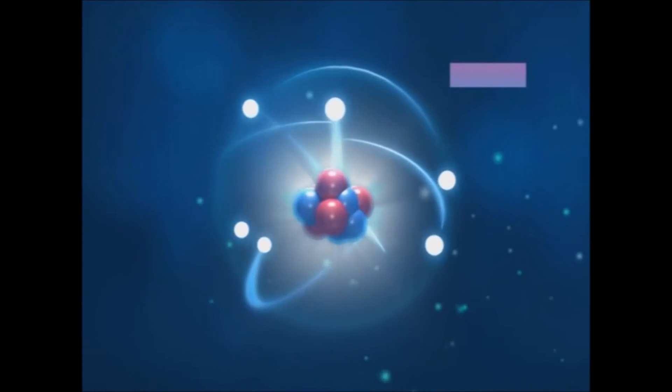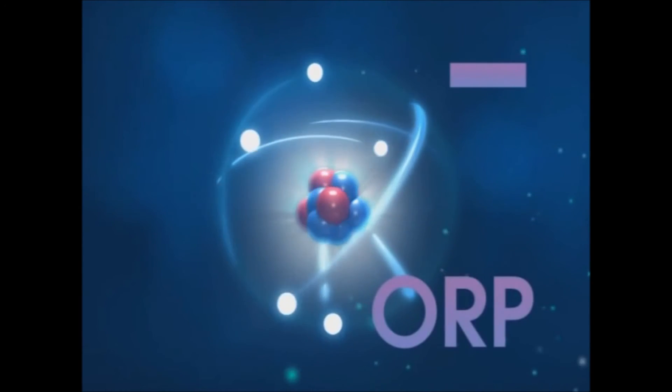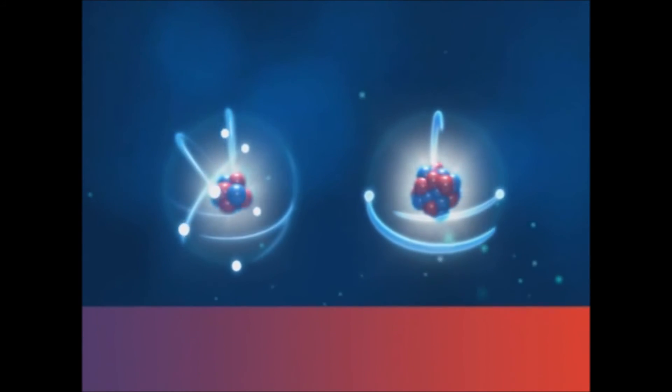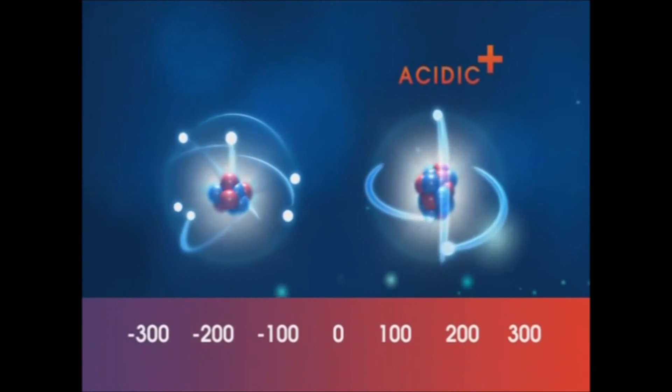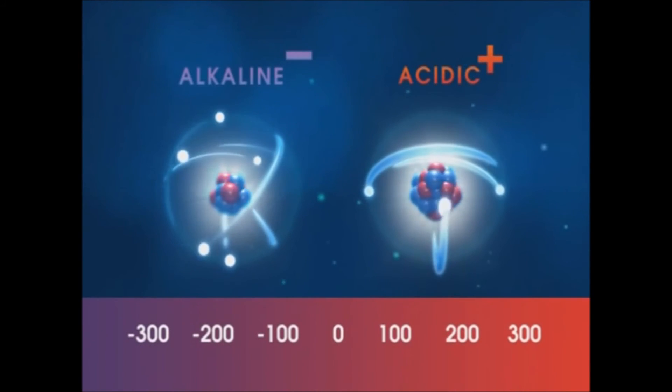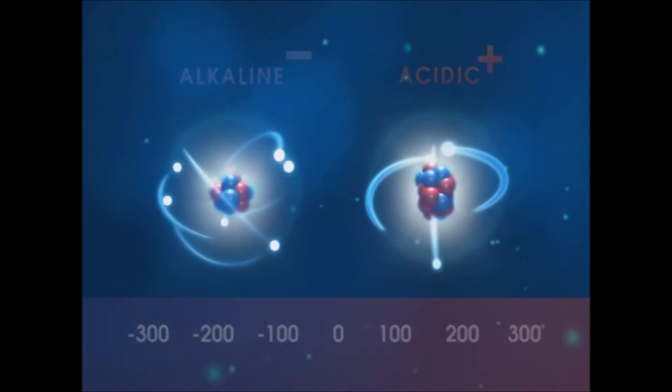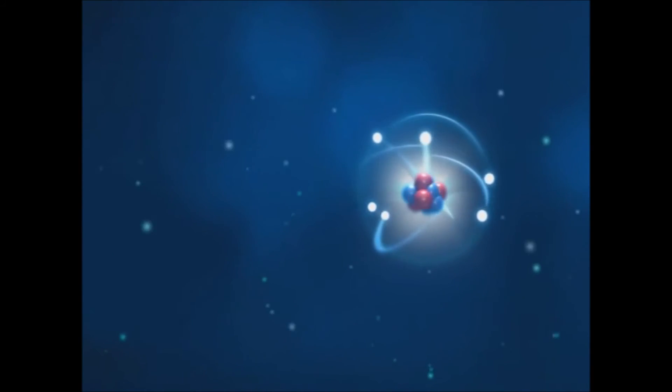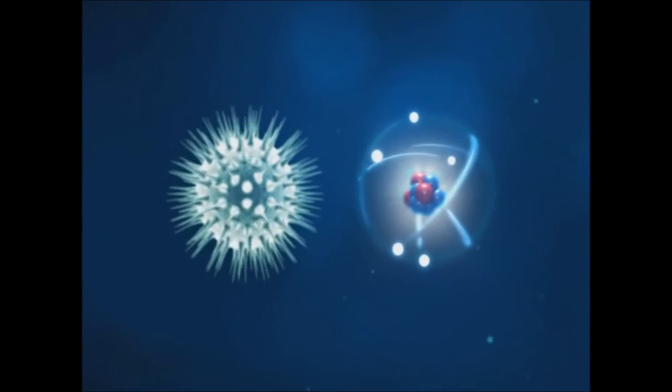The oxidation reduction potential, or ORP, of a substance is directly linked to its charge. Substances with positive charges are acidic, and in most cases, substances with negative charges are alkaline. The farther below zero the charge, the greater the amount of antioxidant properties, which equals an enhanced ability to fight free radicals at the cellular level.